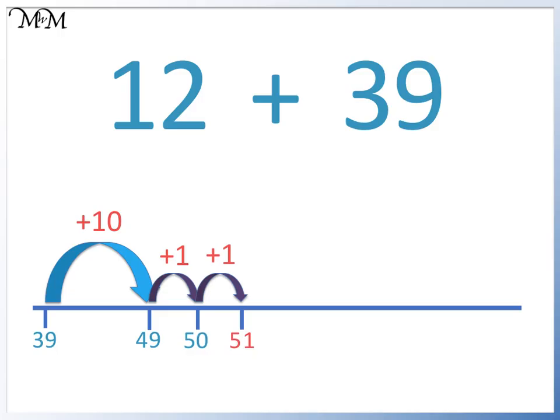12 plus 39 equals 51. We make 1 jump of 10 and 2 jumps of 1.